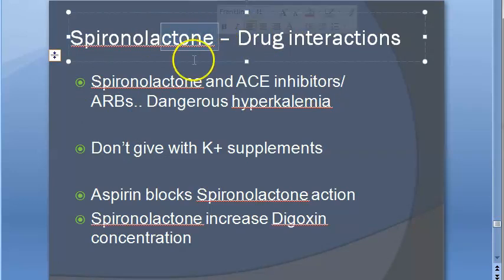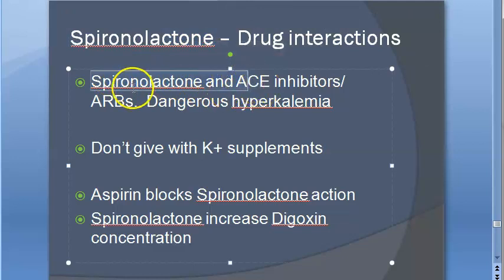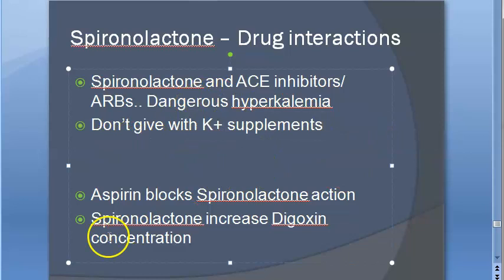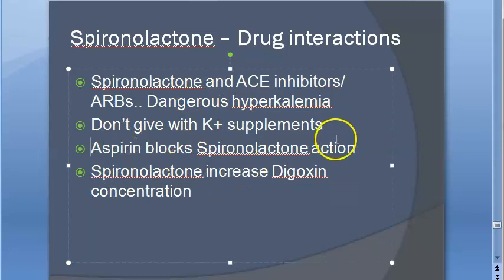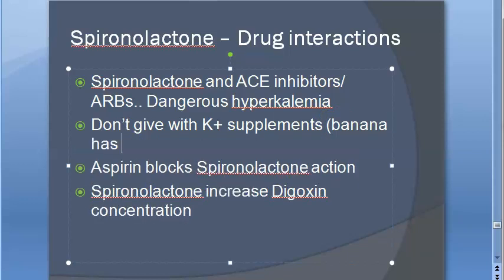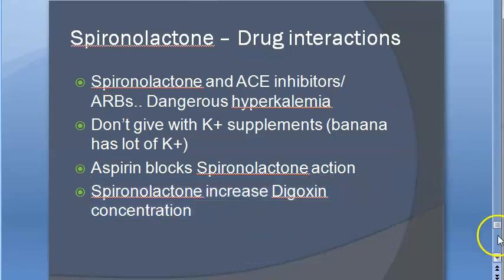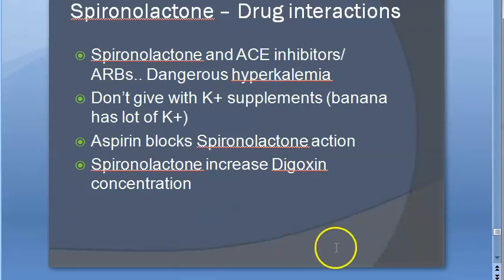Drug interactions of spironolactone: when given along with ACE inhibitors or ARBs — angiotensin receptor blockers — there can be dangerous hyperkalemia, so potassium levels will increase to dangerous levels. You should not give it along with potassium supplements, as the patient will go into hyperkalemia. Patients should also be careful with their diet — bananas have a lot of potassium. Aspirin blocks spironolactone's action. Spironolactone increases digoxin concentration, leading to digoxin toxicity.